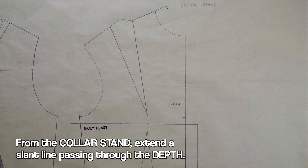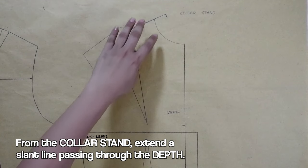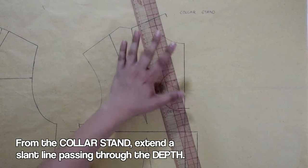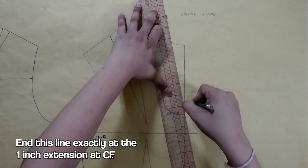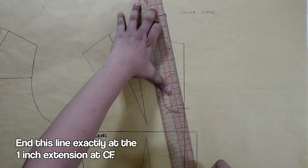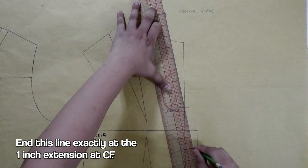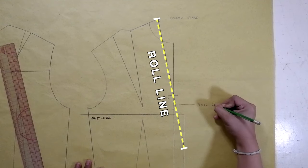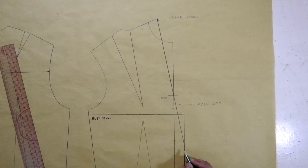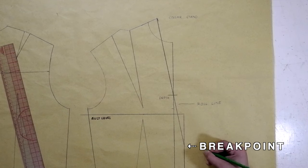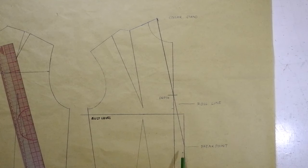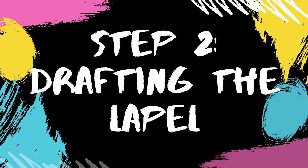Next, from the collar stand, the 1 inch, draw a slant line passing through the mark at the bust level or the depth, ending or touching this line exactly at the 1 inch extension at center front. The slant line here is called the roll line or the fold for the lapel. And where the roll line ends is called the break point. The break point is where the fold of the lapel ends. Later, you will understand once we move on to the lapel drafting. Okay, so let's continue to the next step.